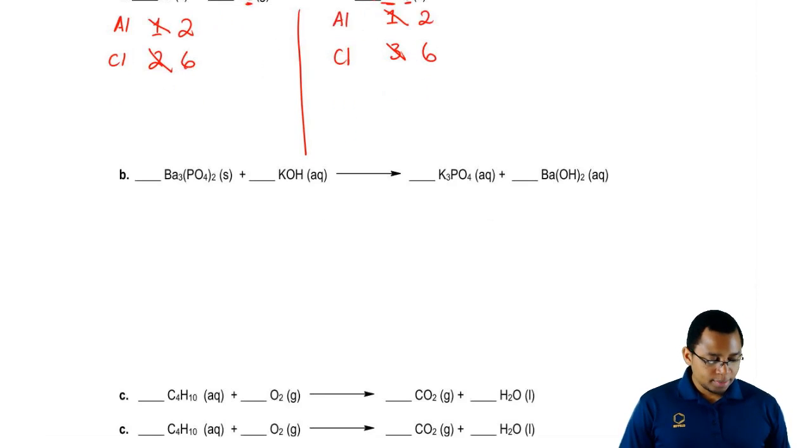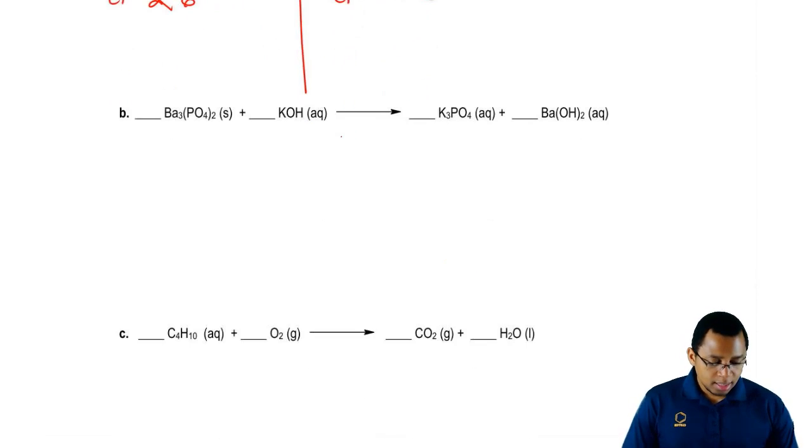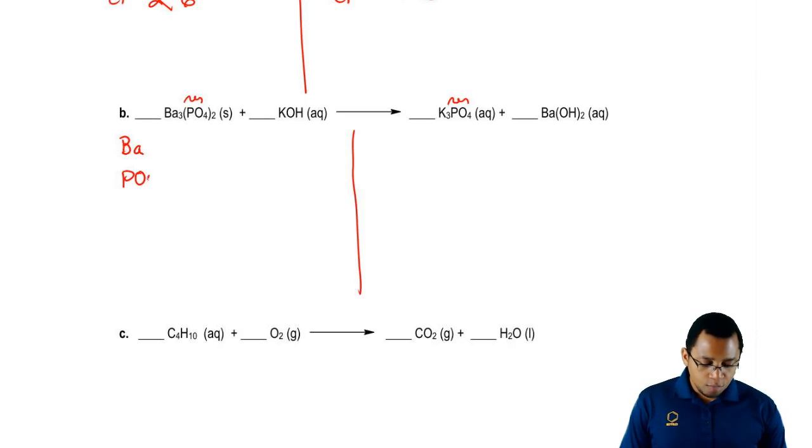For the next one, let's take a look to see what groups we have. What we should notice here is, you see this PO4 right here? It's right here as well. It's a polyatomic ion, it came from phosphate. If you have polyatomic ions that look the same on both sides, just keep them all together to help us balance. We're going to say on the left side we have Ba, we have PO4, we're keeping it all together, counting it as the same.